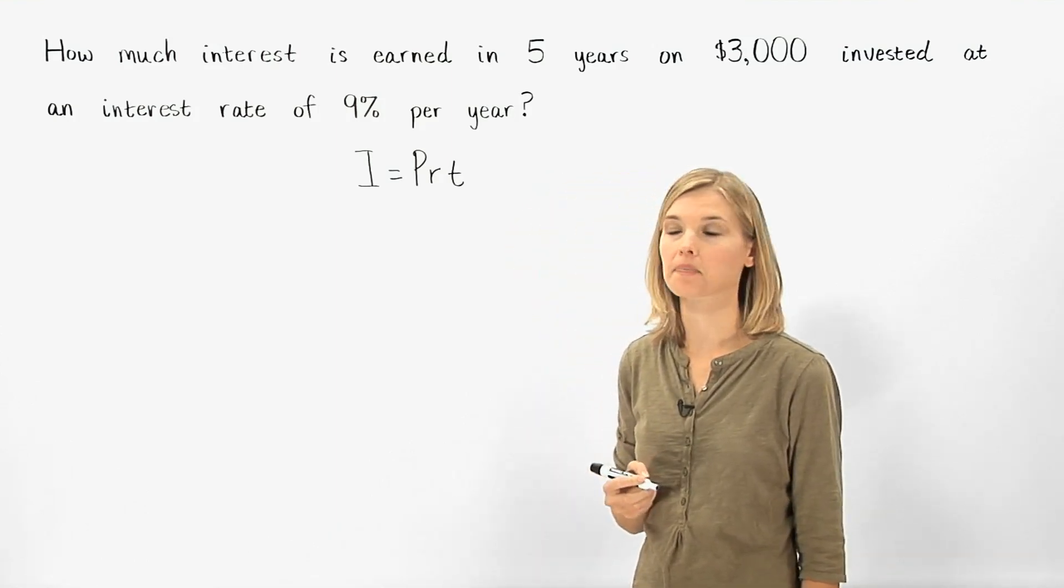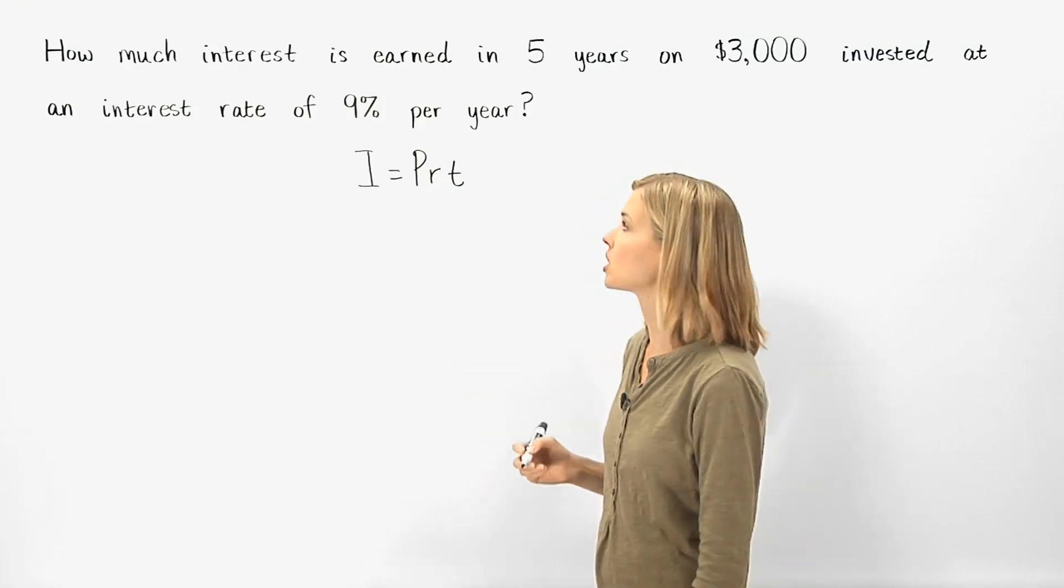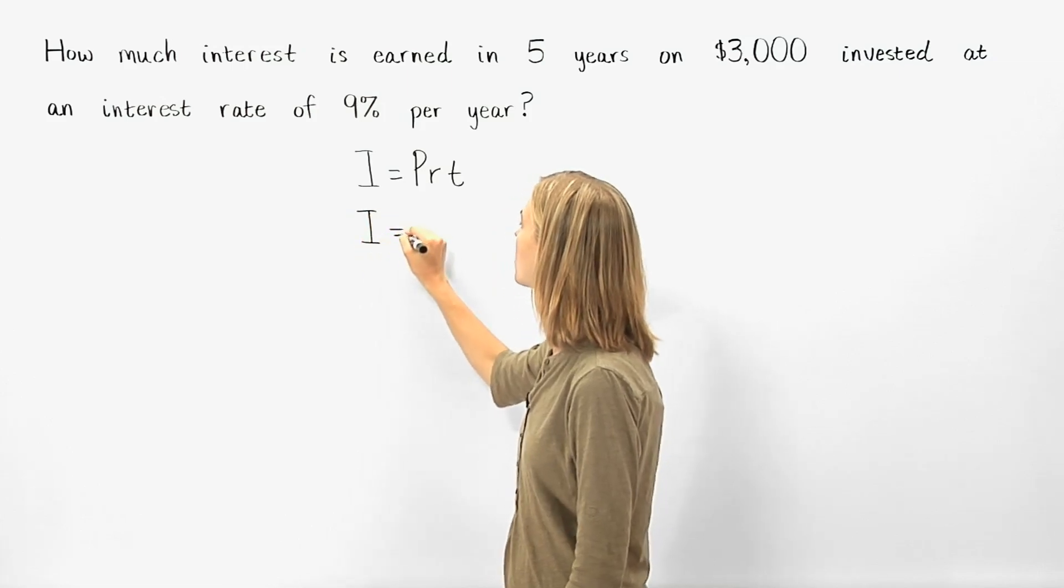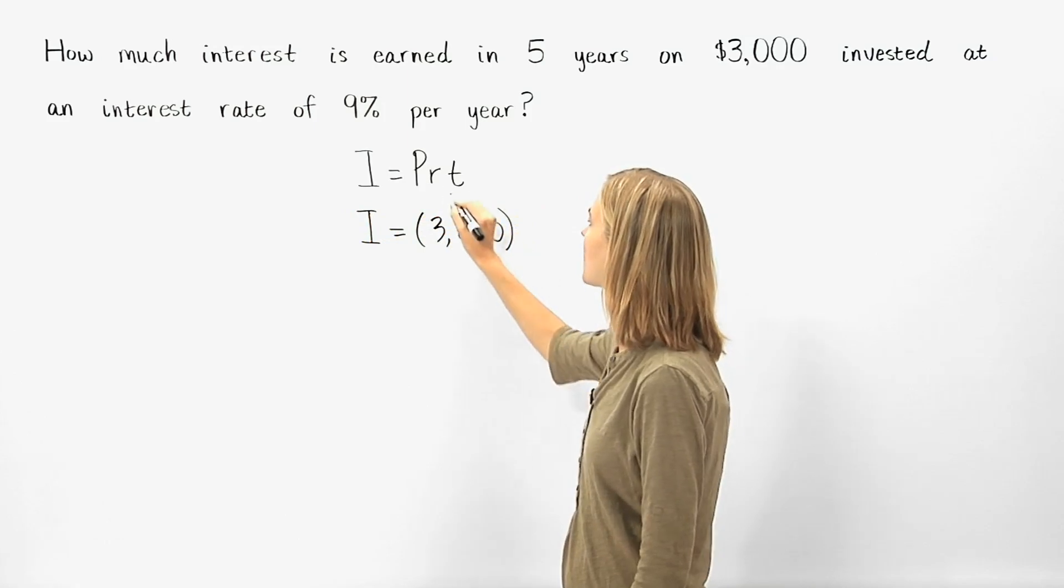Now we simply fill in the formula. Remember that principal is the amount of money invested, which in this case is $3,000. So we have I equals 3,000 times the rate,